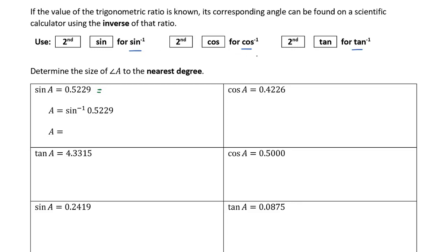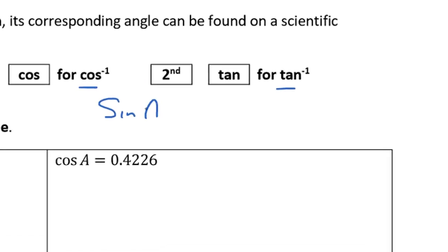Remember from SOHCAHTOA, focusing on the sine function, sine of an angle A equals opposite over hypotenuse. Let's say we had a right-angled triangle, angle A is here, the hypotenuse is 10, and this side is 5.229. Because we're using trig ratios, we should label our triangle: this is the hypotenuse, this is the opposite side, and this is the adjacent.